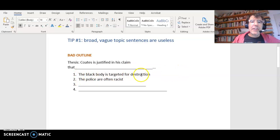If your topic sentences for the parts of your essay look like this, then you'll need to revise. 'The black body is targeted for destruction.' Well, that's Coates' thesis for the whole book. So that can't be a specific body paragraph. A body paragraph needs to be about just a small piece of the overall pie. Here you're telling us what the whole pie is. 'The police are often racist' - way too broad.